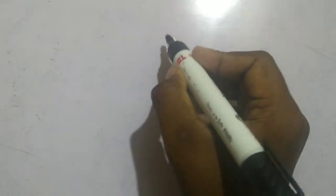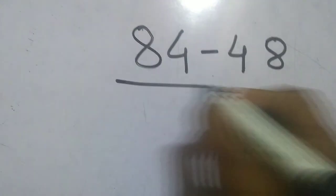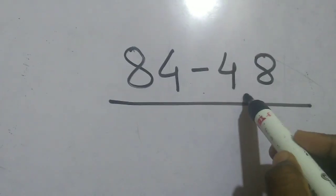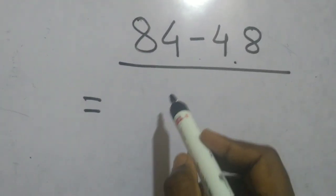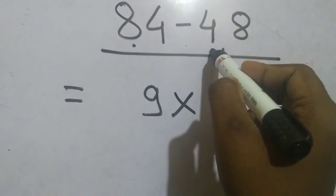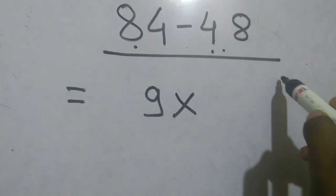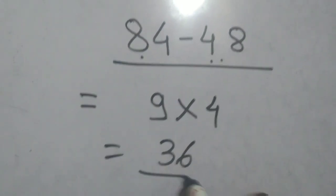Let's solve next example: 84 minus 48. Here 48 is opposite of 84, so in answer you have to multiply 9 with the subtraction of this. 8 minus 4 is 4, 9 times 4 is 36. 36 is the answer.